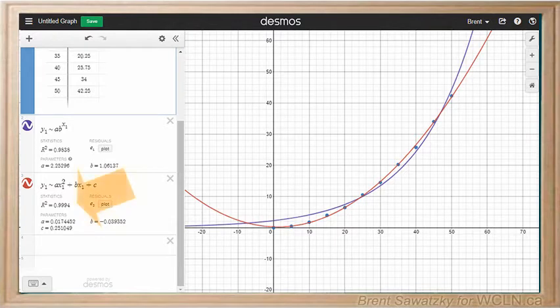We see r squared equals 0.9994 for this one. That's really good. That's even better than the exponential relation. Thus we recognize the trend in this data as being represented best by a quadratic equation.